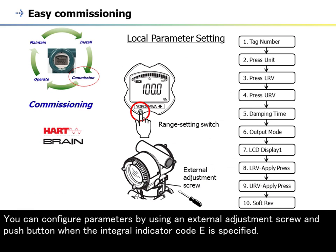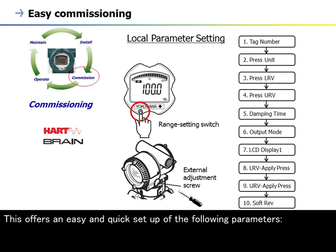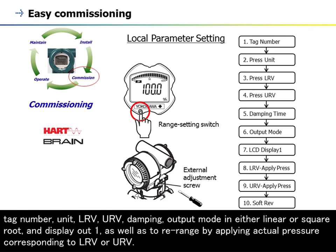You can configure parameters by using an external adjustment screw and push button when the integral indicator code E is specified. This offers an easy and quick setup of the following parameters: tag number, unit, LRV, URV, damping, output mode in either linear or square root, and display out 1.